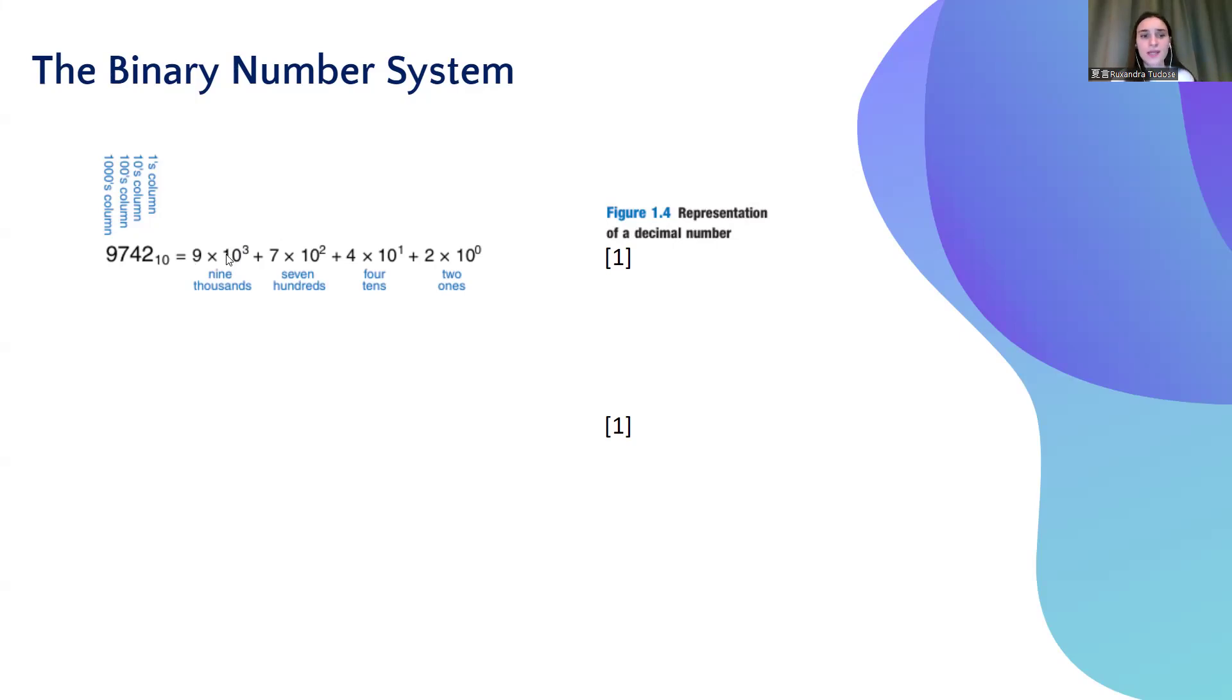So, I start with 9 times 10 to the power of 3, and then I decrease 7 times 10 to the power of 2, and so on and so forth.